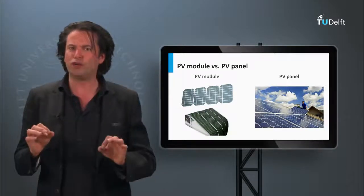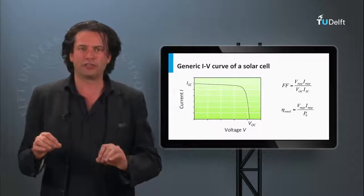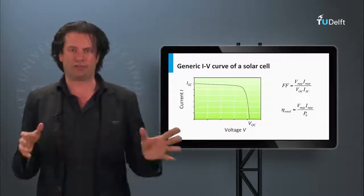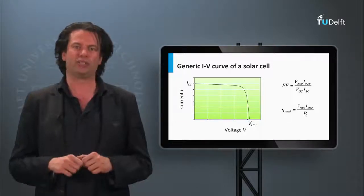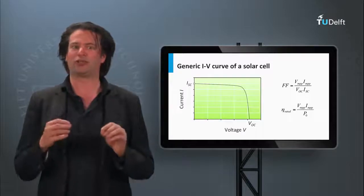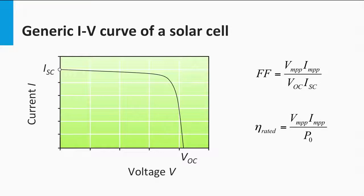So let us move on to the module level concepts. First of all, I would like to introduce a new term: the IV curve. So far we have been discussing the JV curve at the solar cell level, J being the current density — current per unit area. But at the module level, the total current that the module can generate is of more interest. Hence, we look at an IV curve, or the current-voltage curve. As the area is a constant, the IV and JV curve of the solar cell or solar module will have identical nature.